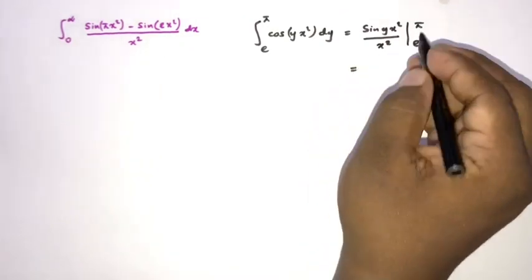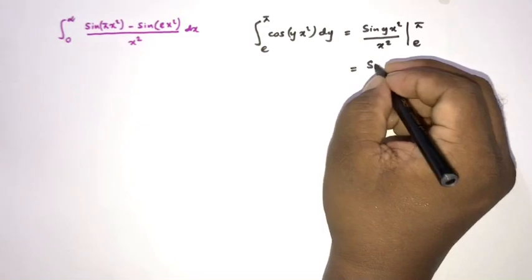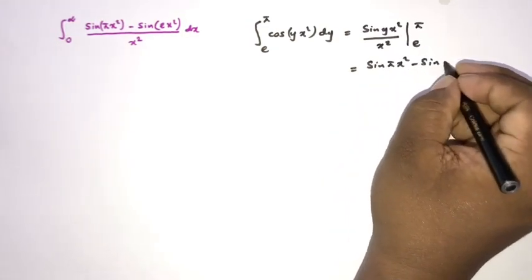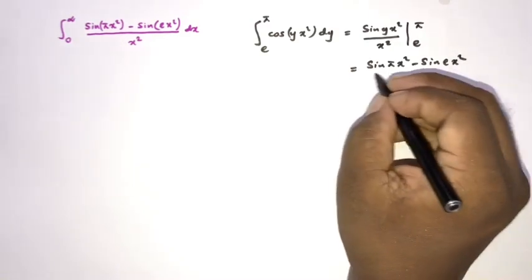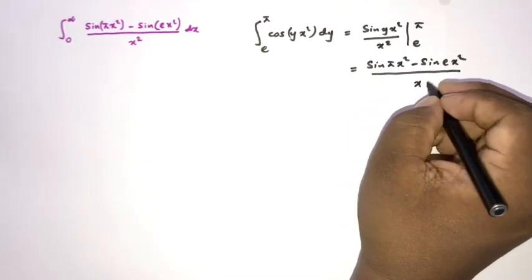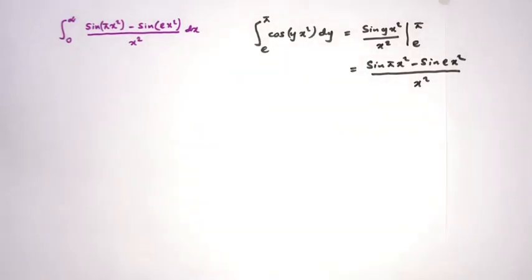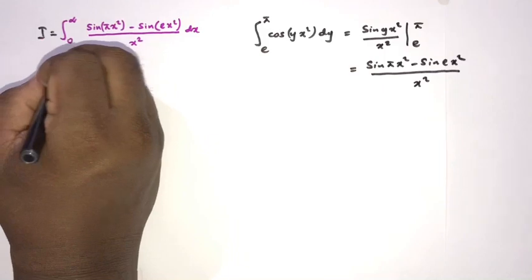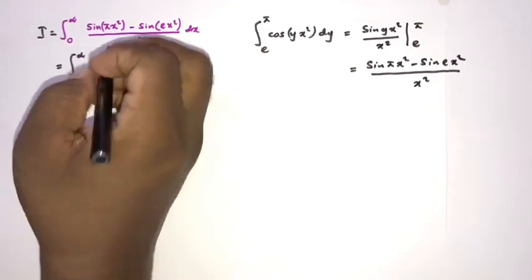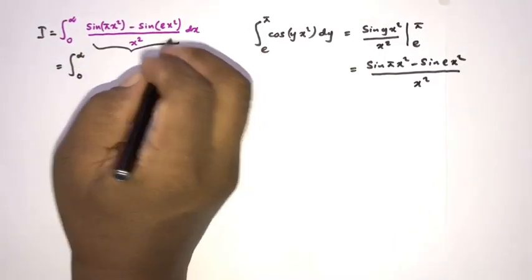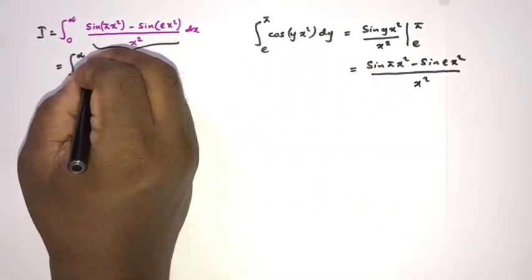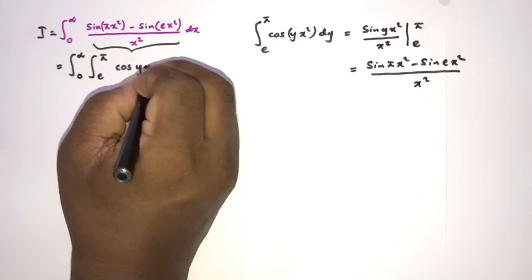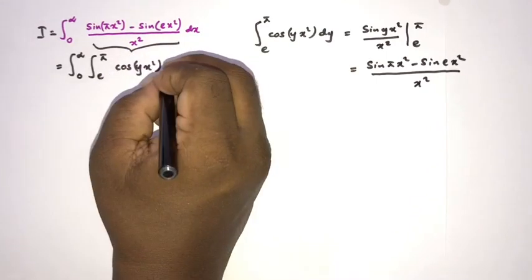Applying the limits from e to pi, we get sine of pi x squared minus sine of e x squared, all over x squared. Then we can write our integral I as equal to the integral from zero to infinity, and instead of that expression we write the integral from e to pi of cosine of y x squared dy.